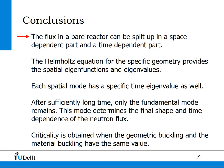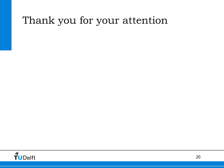To finalize this lecture, the conclusions are as follows. First, the flux in a bare reactor can be split into a space-dependent part and a time-dependent part, and the Helmholtz equation for the specific geometry provides the spatial eigenfunctions and eigenvalues. Each spatial mode has a specific time eigenvalue, and after sufficiently long time only the fundamental mode remains, which determines the final shape and time-dependence of the neutron flux density. Criticality is obtained when the geometric buckling and the material buckling of the reactor have the same value. Thank you for your attention, and if you have further questions, please visit the websites below.